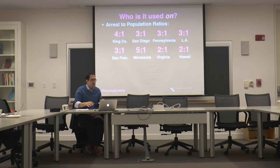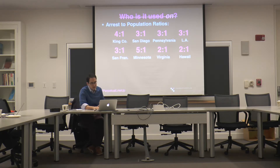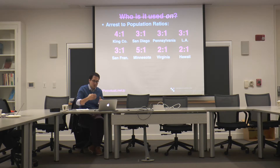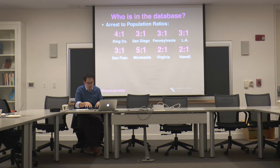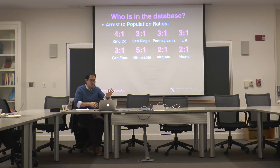As a result of disproportionate law enforcement contact, not only can we have a strong suspicion that this will be used to identify a disproportionate number of African Americans, there will also be a disproportionate number of African Americans in the mugshot database. Depending on the jurisdiction, it will also disproportionately impact immigrants and other groups.